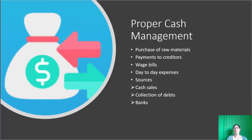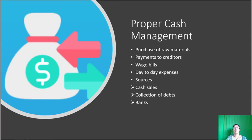Proper cash management: Cash may be required to purchase raw materials, meet wage expenses, and meet day-to-day expenses. The usual sources of cash may be cash sales, collection of debts, or short-term arrangements with banks. Cash management should be such that neither there is a shortage nor the cash is idle. Any shortage of cash will damage the credit worthiness of the enterprise. So the outflows — purchase of raw materials, payment to creditors, wage bills, day-to-day expenses — and the inflows — cash sales, collections from debtors, and amounts from the bank — must be properly managed.